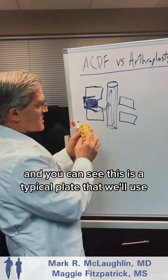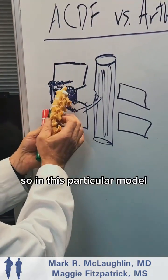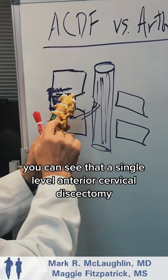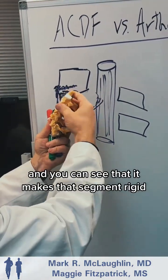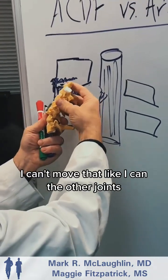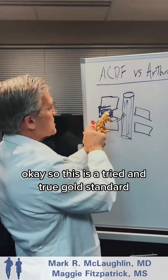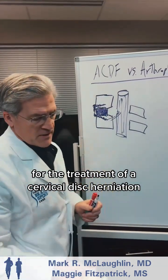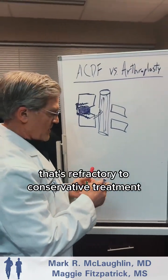You can see this is a typical plate that we use. In this model, you can see a single-level anterior cervical discectomy and fusion was performed, and you can see that it makes that segment rigid — I can't move it like I can the other joints. This is the tried and true gold standard for the treatment of cervical disc herniation that's refractory to conservative treatment.